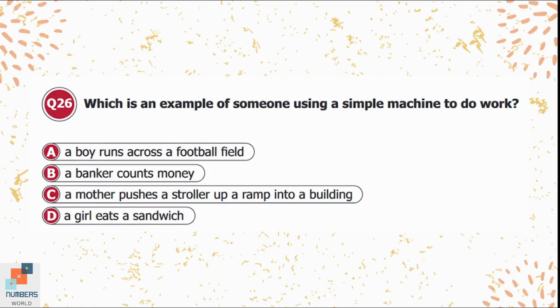Question 26: Which is an example of someone using a simple machine to do work? Option A: a boy runs across a football field. Option B: a banker counts money. Option C: a mother pushes a stroller up a ramp into a building. Option C is correct, as a ramp is a simple machine.